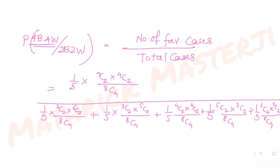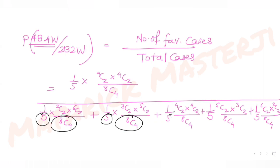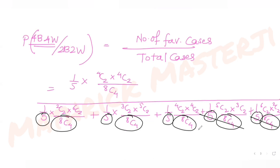In the numerator and denominator, the factor of 5 and 8C4 appear in every term, so they cancel out. We are left with just 4C2 × 4C2 in the numerator, divided by the sum of all five numerator combinations.